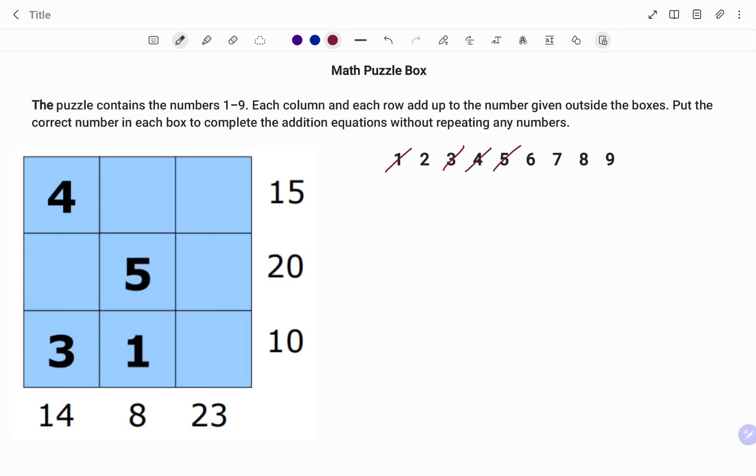Starting with the last row, I have three, one, and an empty box adding up to ten. I'm going to write that as an equation. If my missing number is x, what I have is three plus one plus x equals to ten.